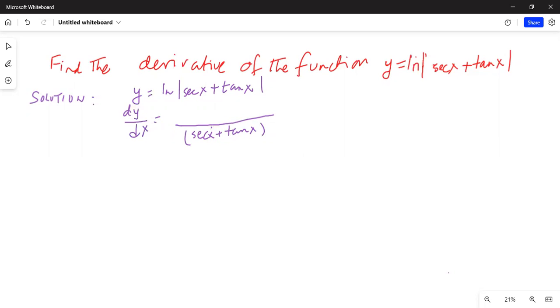And then we do the derivative of secant x, which is secant x multiplied by tangent of x. And derivative of tangent of x is secant square x.